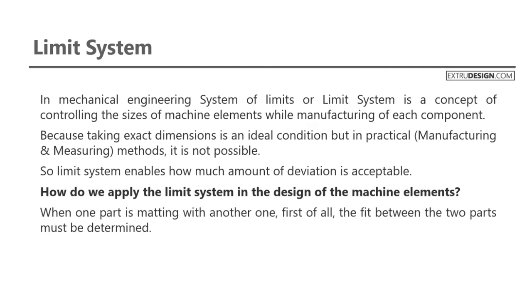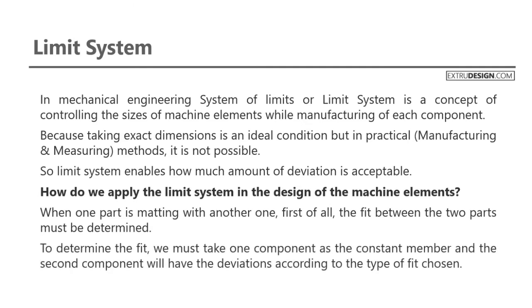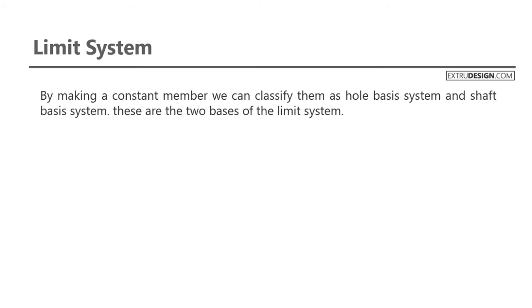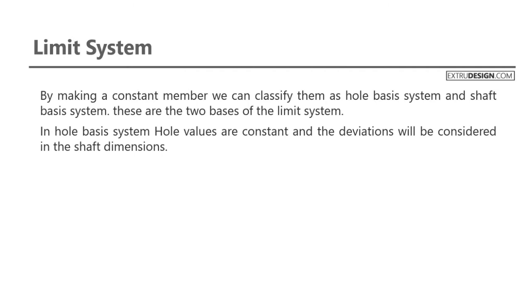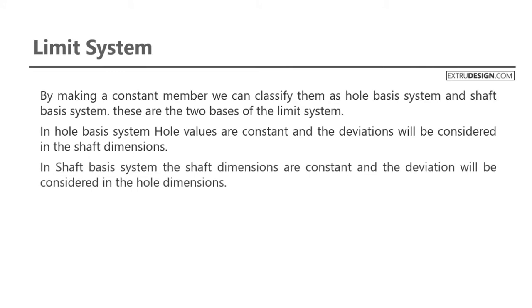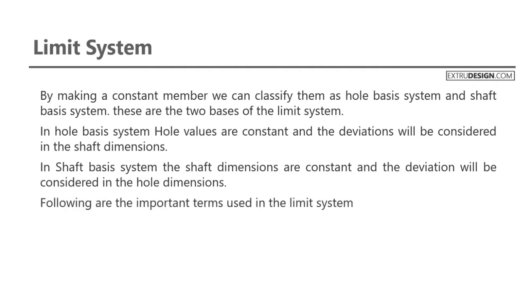When one part is meeting with another one, first of all the fit between the two parts must be determined. To determine the fit, we must take one component as the constant member and the second component will have the deviations according to the type of fit chosen. By making a constant member we can classify them as hole basis system and shaft basis system. In hole basis system, hole values are constant and the deviations will be considered in shaft dimensions. In shaft basis system, the shaft dimensions are constant and the deviations will be considered in hole dimensions. We have discussed more details on this in another video — the link is in the description.